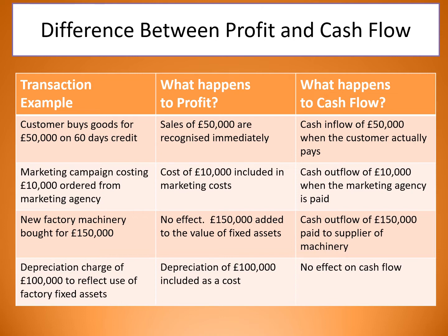If new factory machinery is bought for £150,000 — what happens to profit? There's no effect. Why? Because that £150,000 is added into your fixed assets. When we do balance sheets you'll see this in more detail, but the £150,000 is still a part of your business — you've converted money to machinery, but it is still there and still included, so it remains part of your profit. But your cash outflow of £150,000 is paid to the supplier of the machine — so your cash flow will see a reduction of £150,000 where your profit won't see any change.